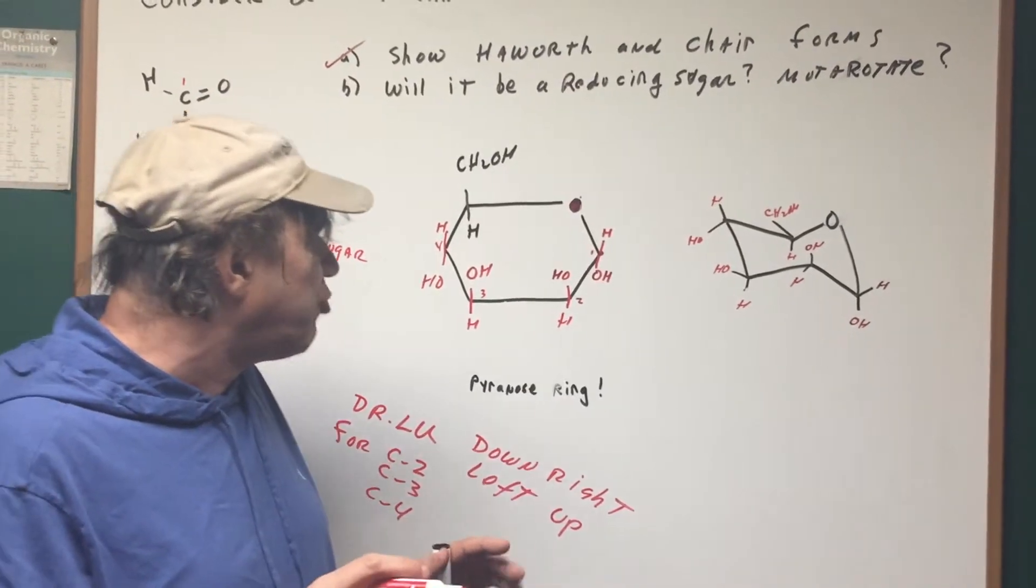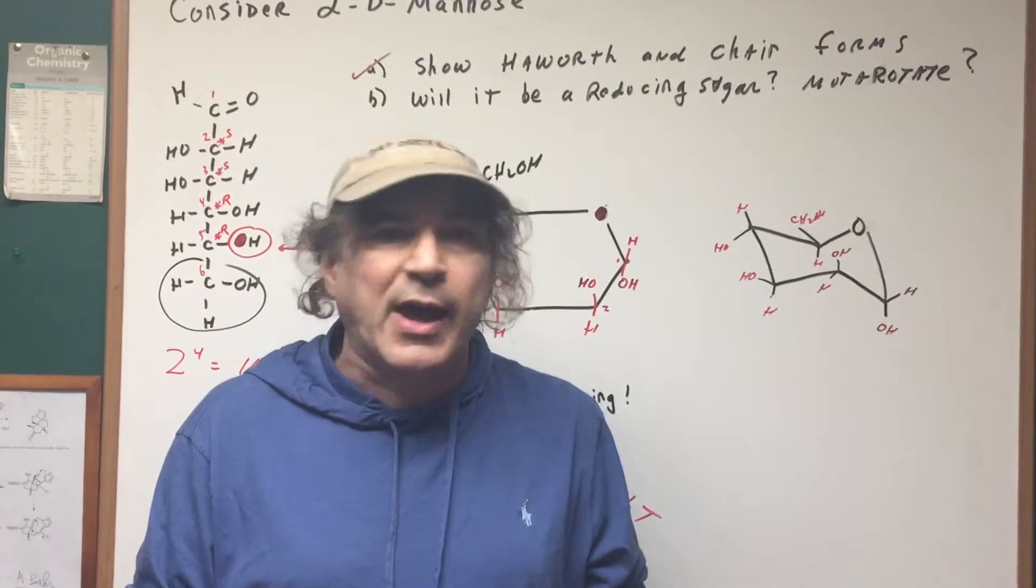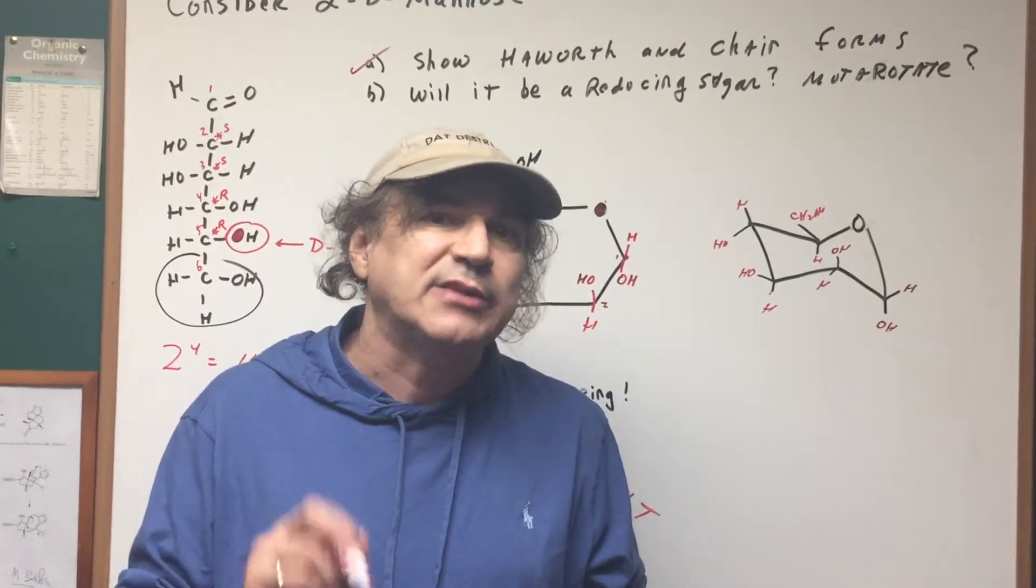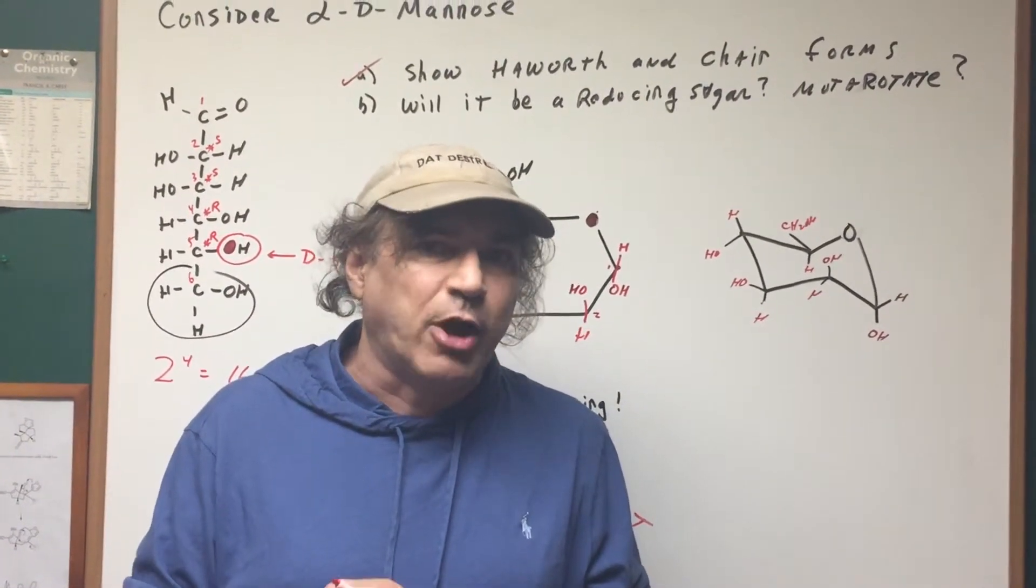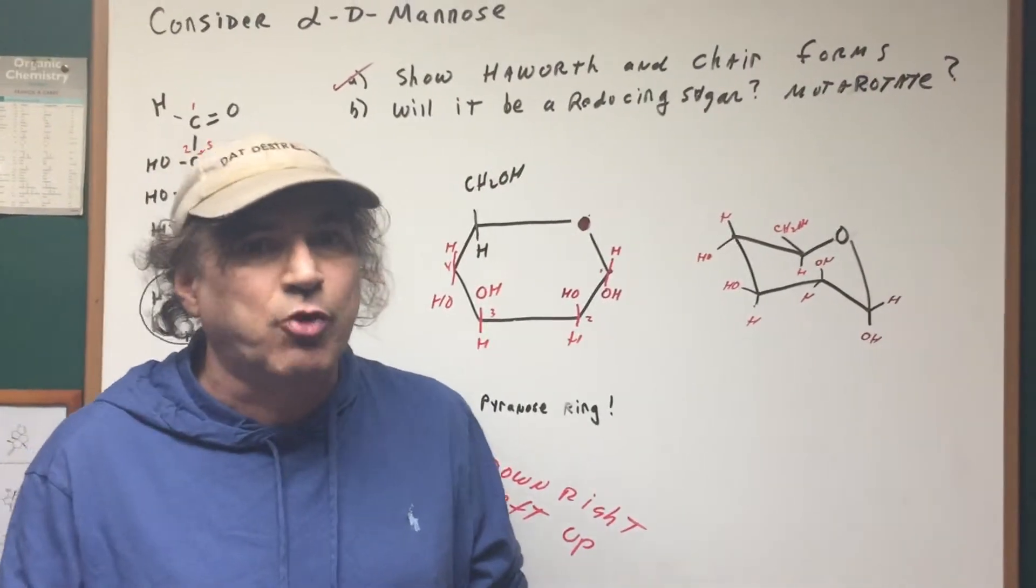Now, what I mean by a reducing sugar means it would give a positive Tollens test, it would give a positive Fehling's test, and a positive Benedict's test. So those are the three tests for our sugars, and you know it's a reducing sugar if that hemiacetal group is present.